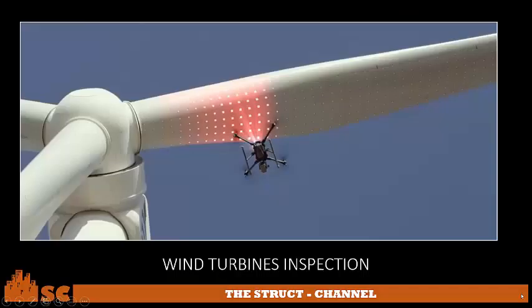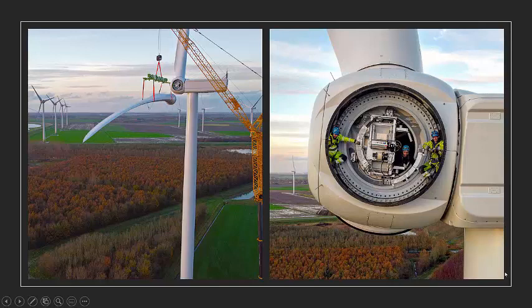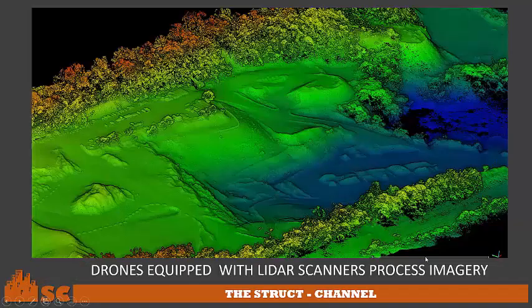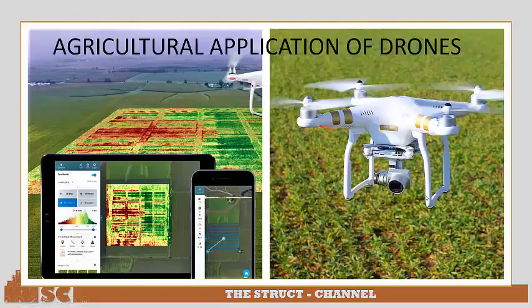For wind turbine inspection, you can map out the blades using point-to-point shots utilizing your drone, or you can zoom in while being in the construction site to see people working or if there is a problem at the site. Drone-equipped LiDAR scanners can also process imagery like this. Drones are utilized also for agricultural applications, where the color red in the imagery represents areas that need to be addressed by perhaps adding some irrigation to have more productive crops.